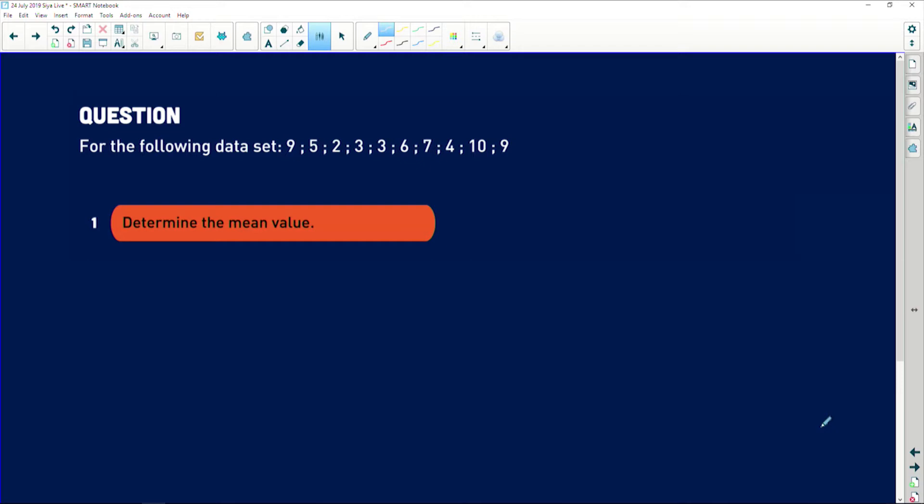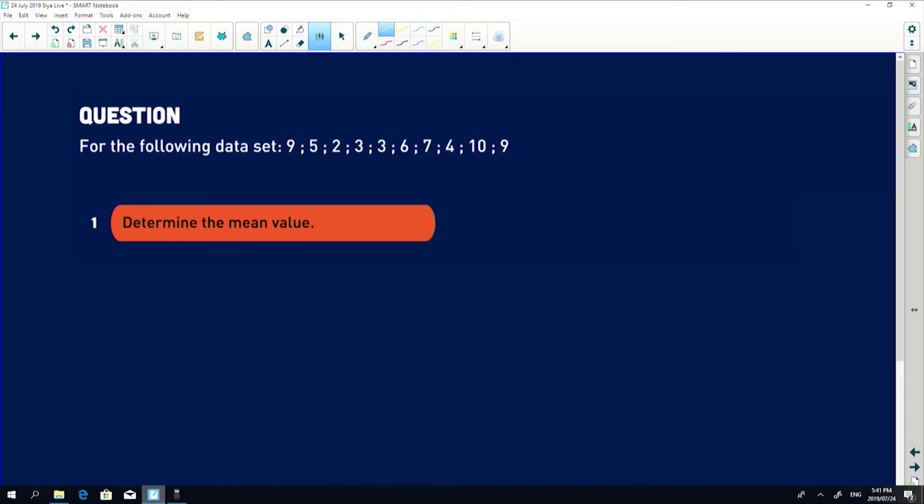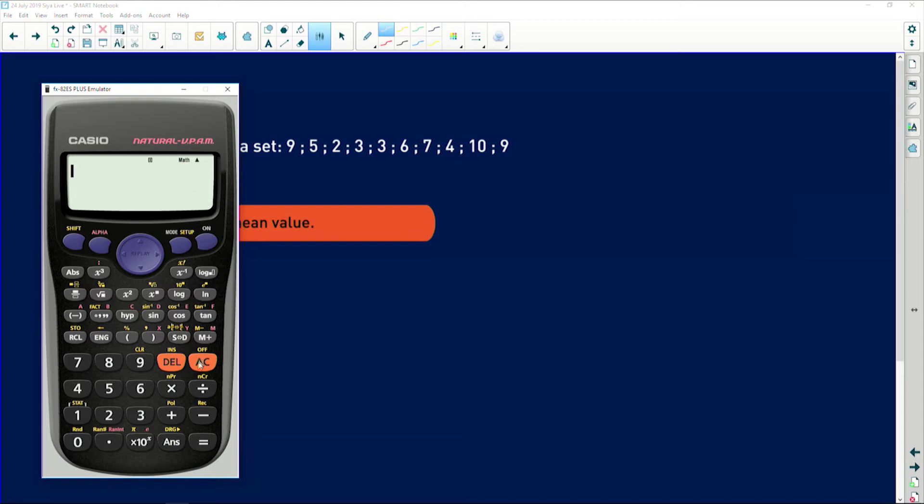Determine the mean value of this particular data set. Please remember that I said to you, you don't necessarily need to use the manual version of solving for this and trying to add all the values and dividing by the total number. You can go straight to your calculator. Remember, you need to make sure that it is in stat mode. We're taking option number one, which is 1-variance.